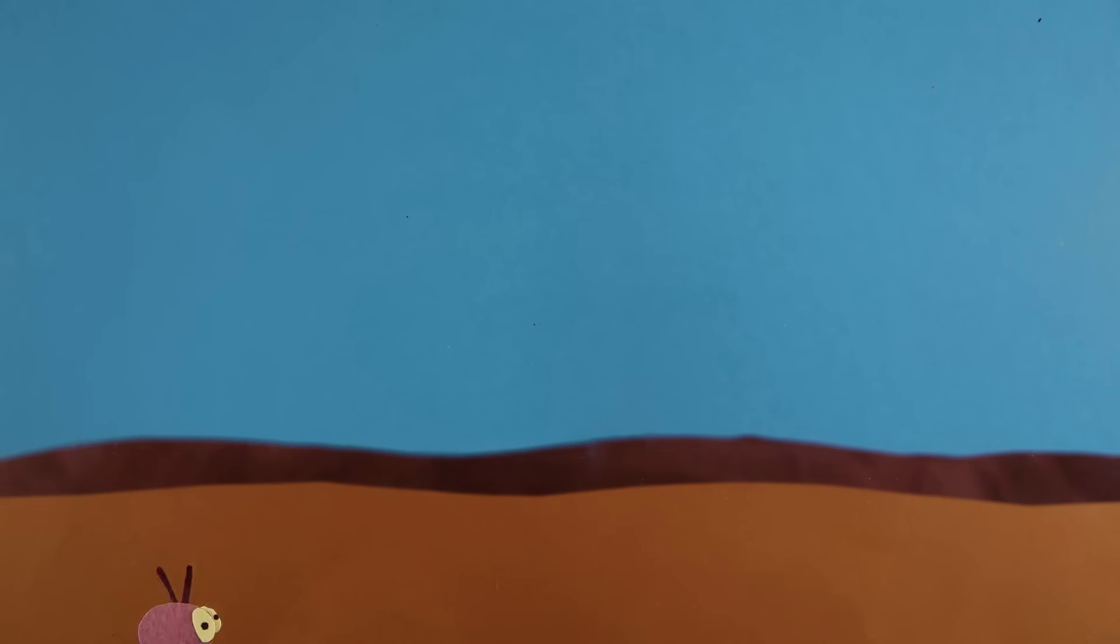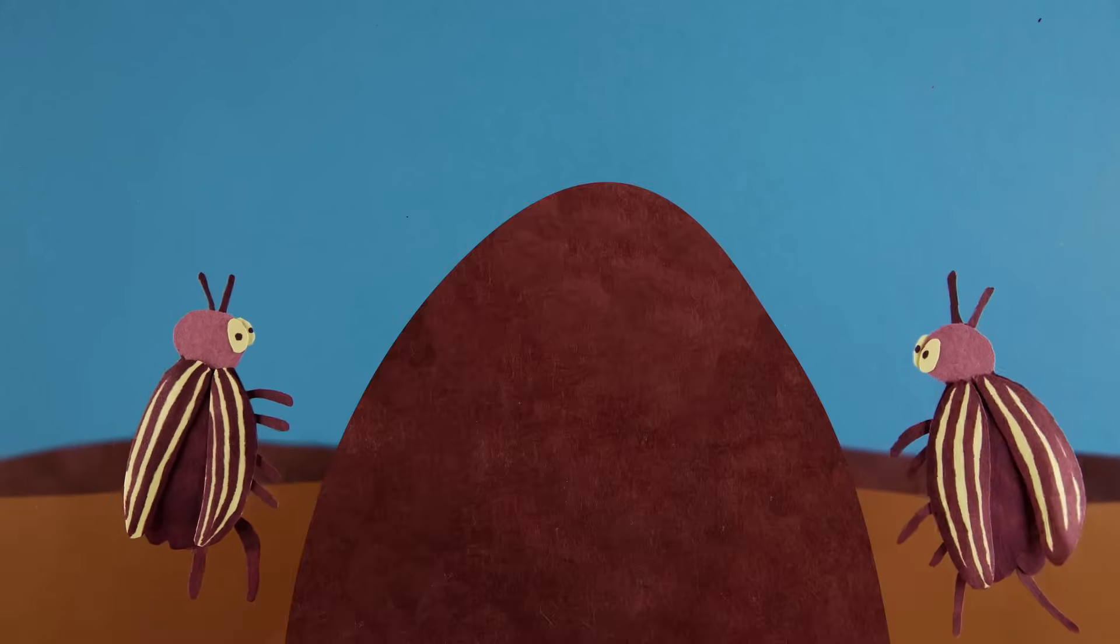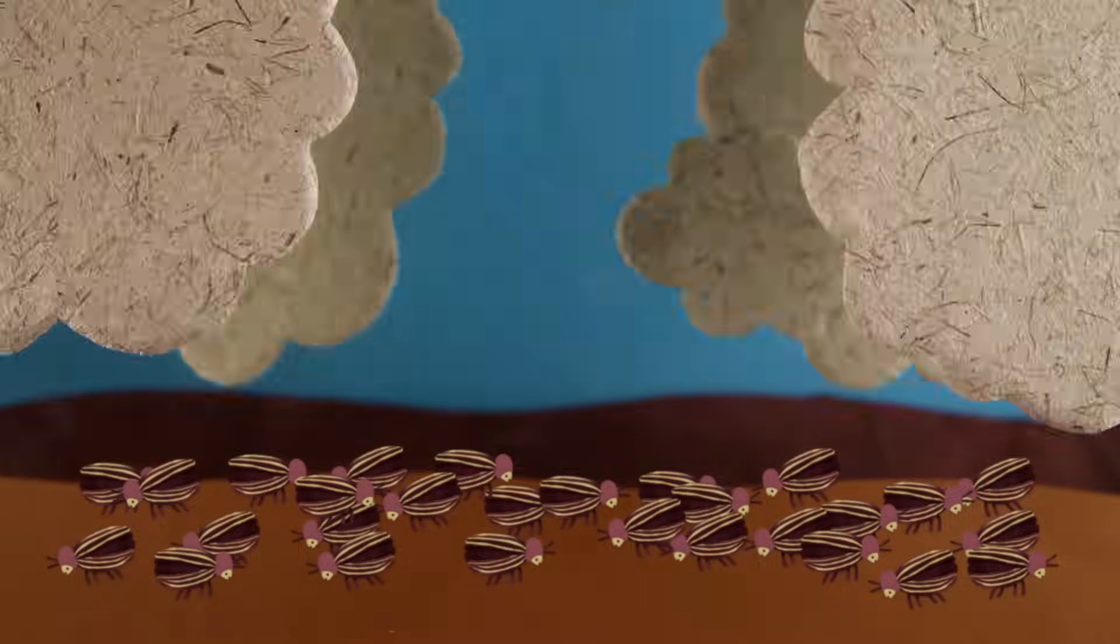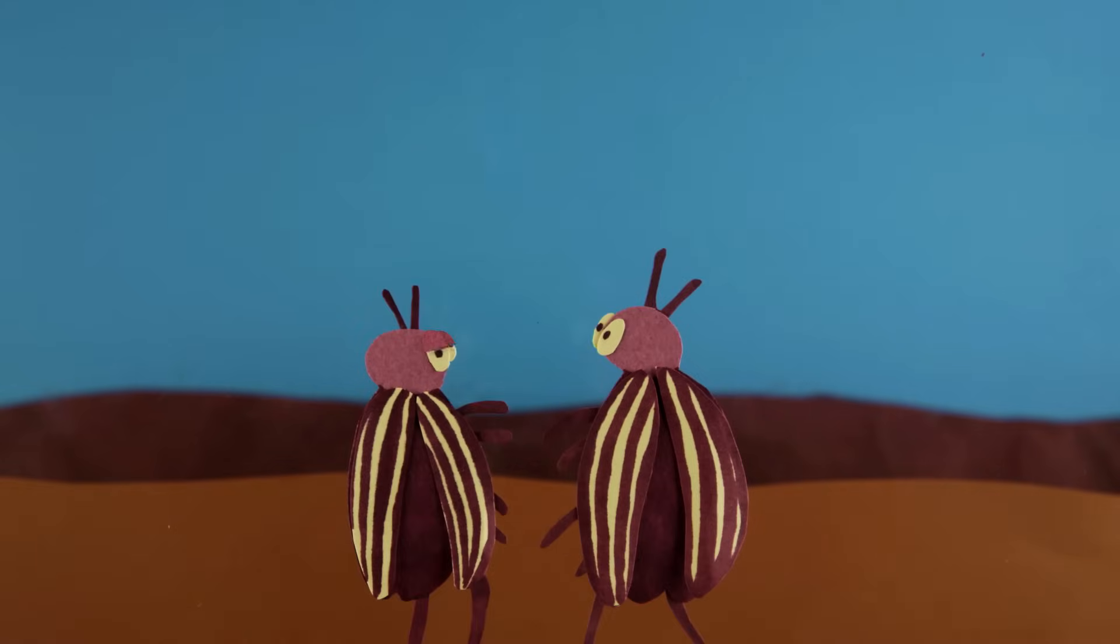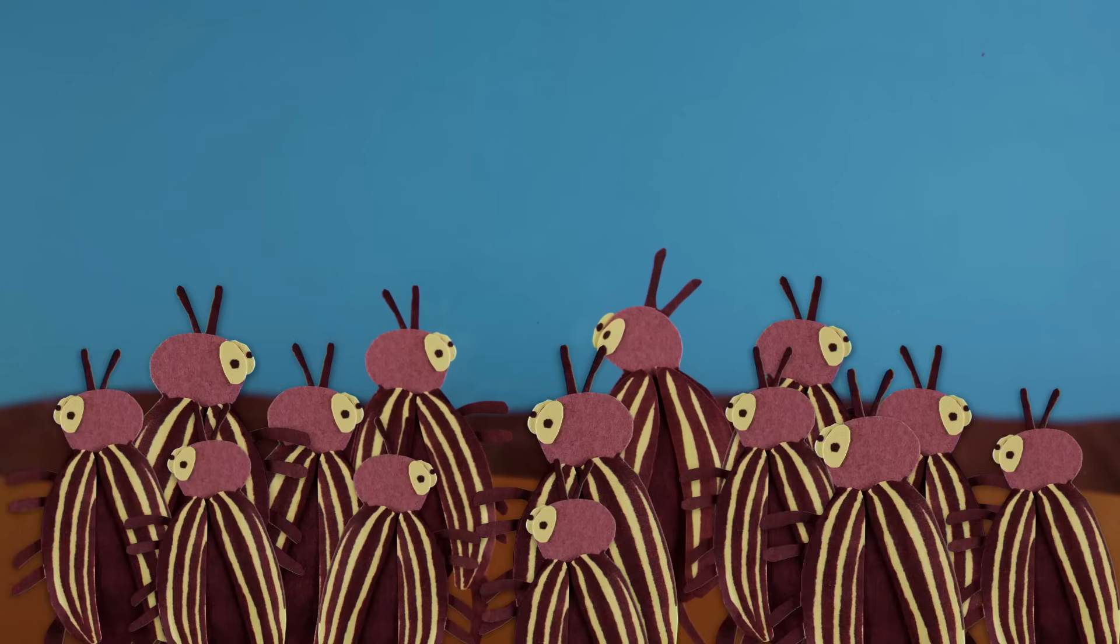Since then, chemists have been searching for alternatives. With each new wave of inventions, they've encountered the same obstacle, rapid species evolution. As pesticides destroy pest populations, they leave behind only the most resistant individuals. They then pass on their pesticide-resisting genes to the next generation.